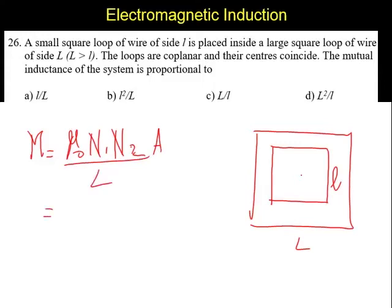In this case, N₁ and N₂ are both 1. So it is μ₀ times l by L. A is the area of overlap. The area of overlap is this area, so we can say it is l².